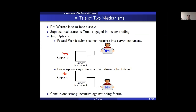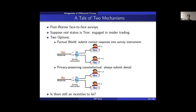With Warner's spinner, we can view it as a machine: the respondent feeds their response in, and with probability P the machine outputs the response unchanged, and with probability 1 minus P it flips the response. In the factual world where the respondent inputs yes, the output is yes with probability P and no with probability 1 minus P.